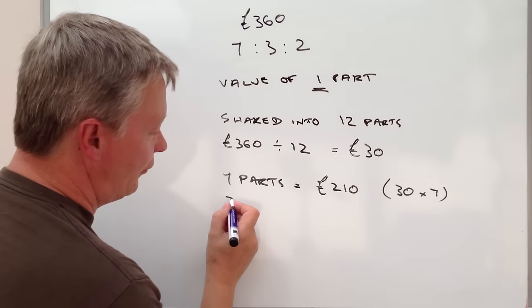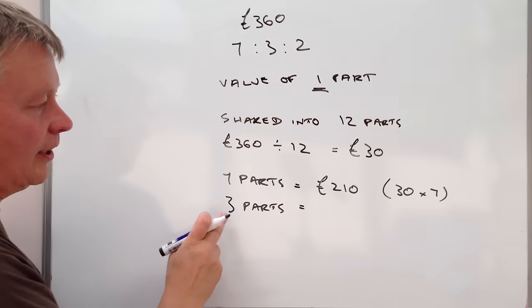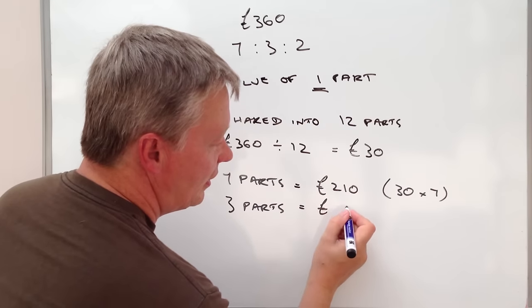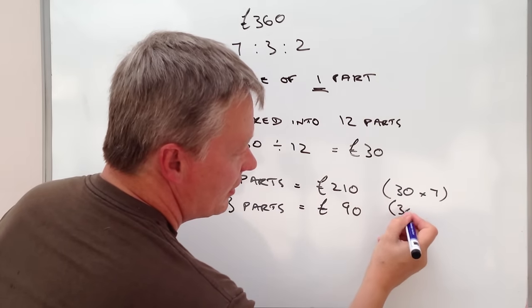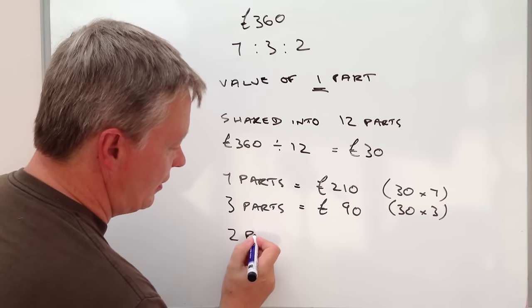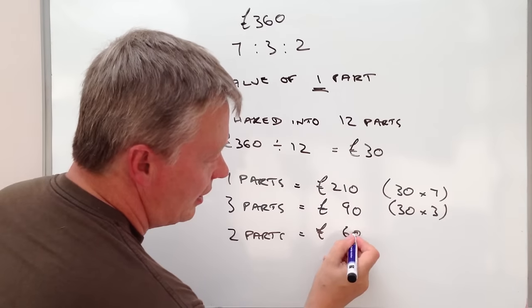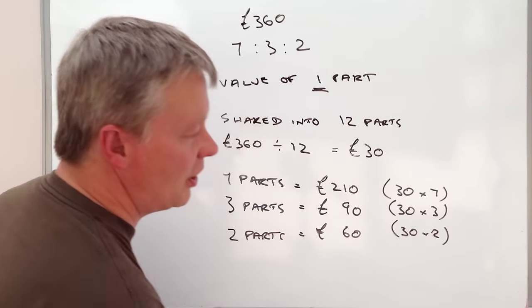The person who got three parts, well, they got £30 times three, which is £90. And the person who got two parts, well, that's going to be £60, because that's going to be £30 times two.